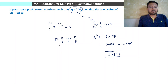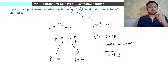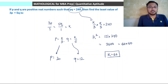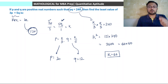Since k equals 60, p equals 60 by 3 which is 20, and q equals 60 by 5 which is 12. Now 3p plus 5q equals k plus k equals 2k equals 120. So the least value of 3p plus 5q is 120, achieved when p equals 20 and q equals 12.